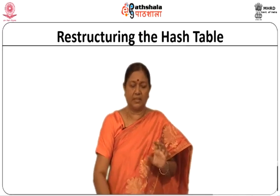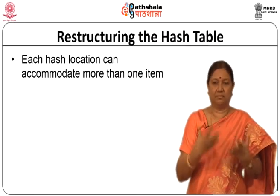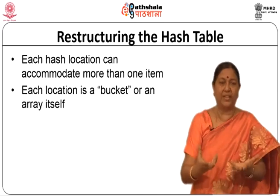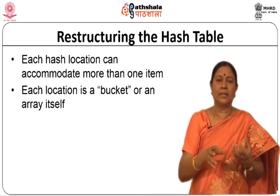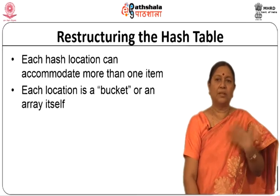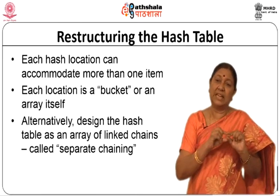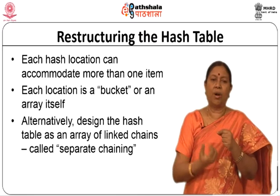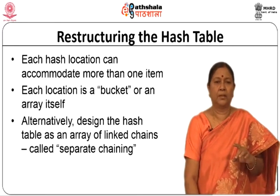One method is to restructure the hash table so that each hash location can accommodate more than one item — that is, each location is now a bucket or an array itself. Alternatively, you can design the hash table as an array of linked chains, also called separate chaining. Each location is a bucket and an array itself, or the hash table can be designed as an array of linked lists — this method is called separate chaining.